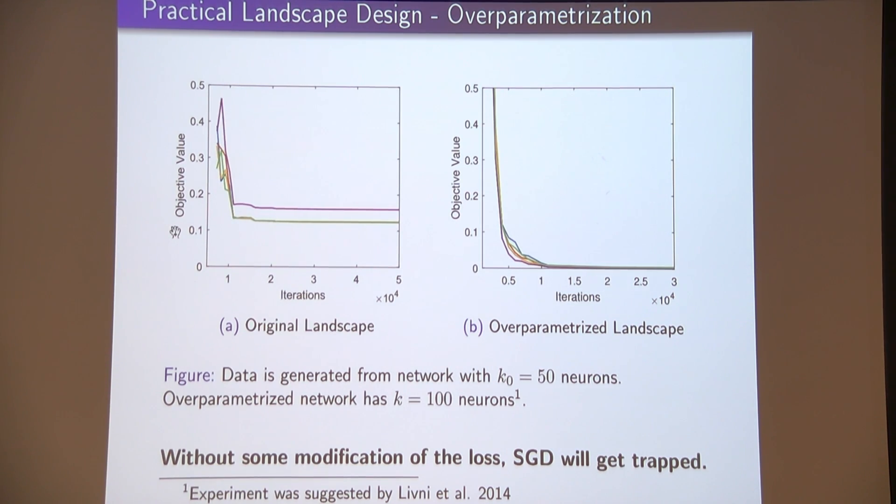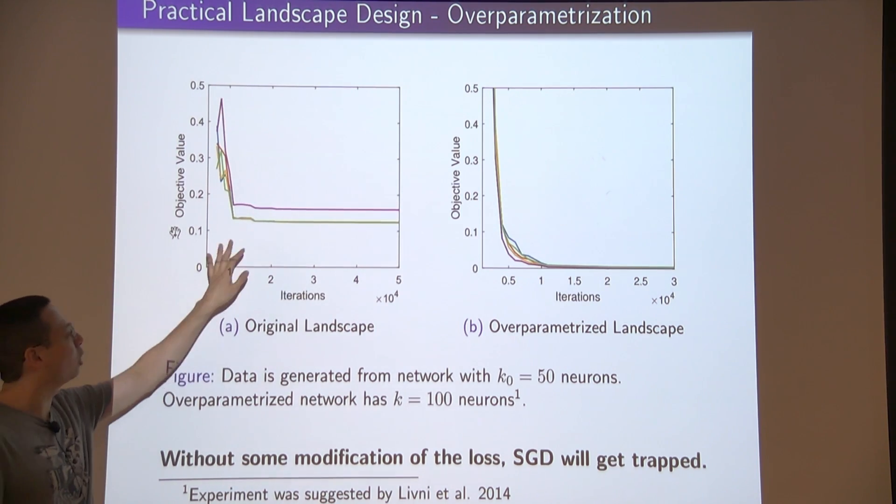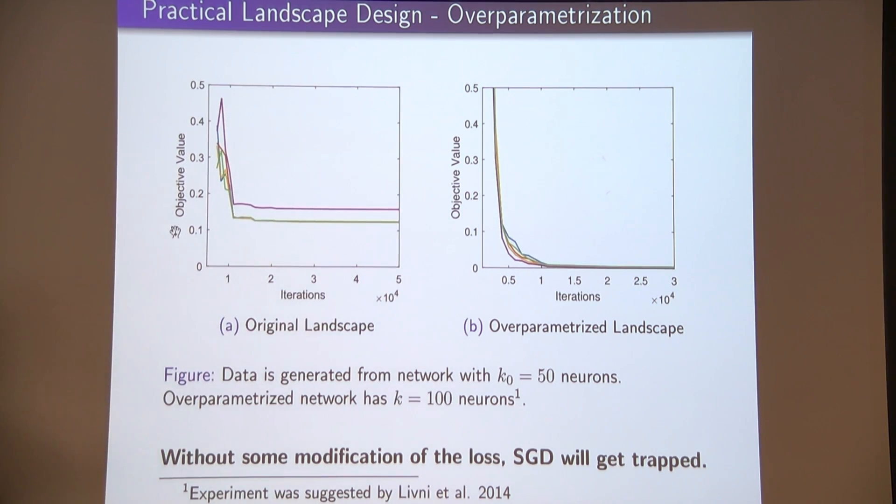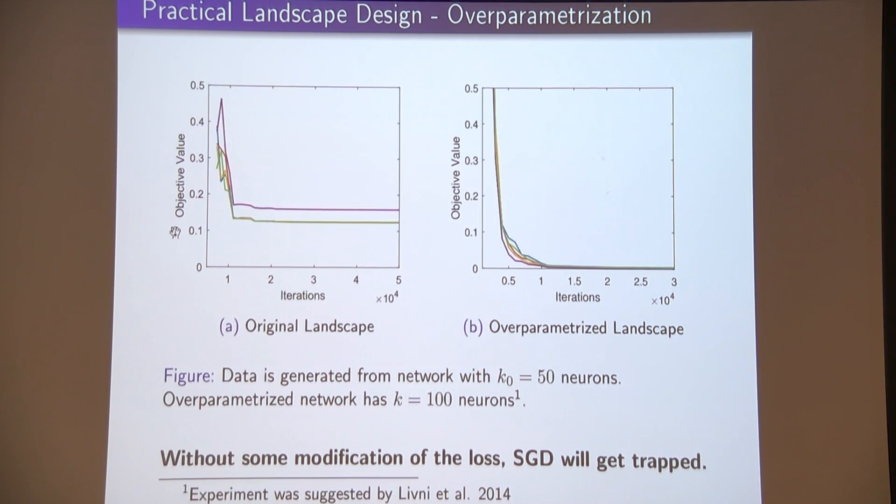Of course, there's no point in being statistically efficient if you can't even get the train error small. Your final error is your train error plus whatever lost from your generalization error. So the takeaway message here is you need to modify the loss landscape in some way. A very effective way to do this is by changing the model you use. Otherwise, SGD is going to get trapped.